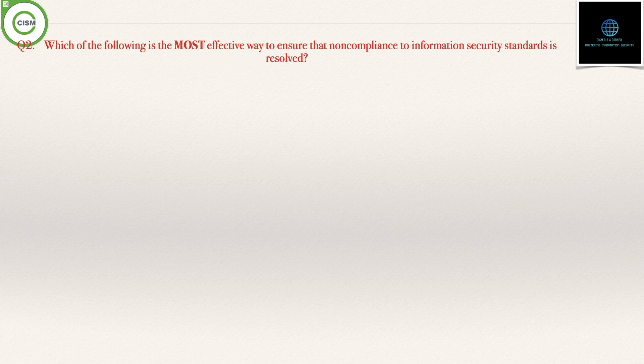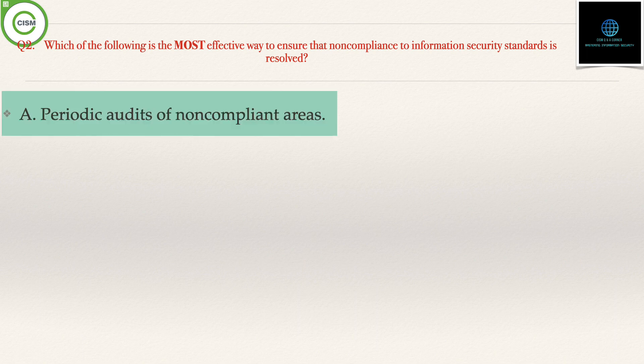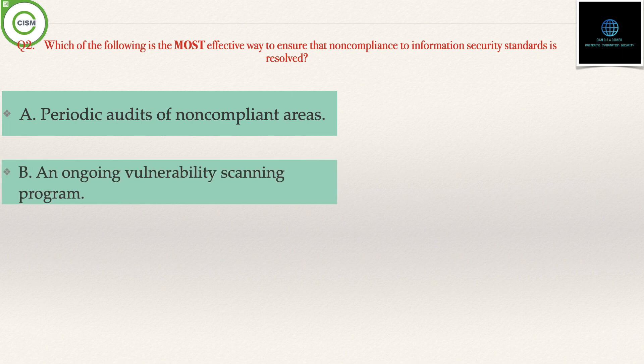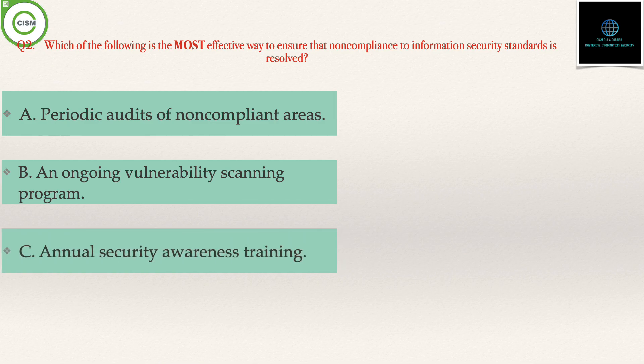Moving to the next question: which of the following is the most effective way to ensure that non-compliance to an information security standard is resolved? The options are: option A, periodic audit of non-compliant area; option B, an ongoing vulnerability scanning program; option C, annual security awareness training.